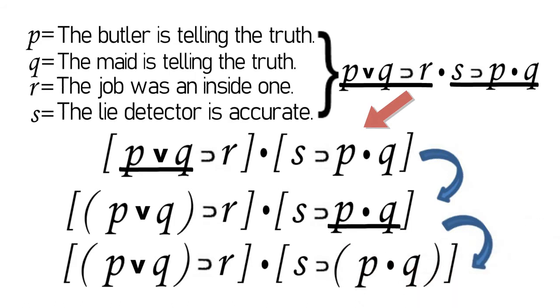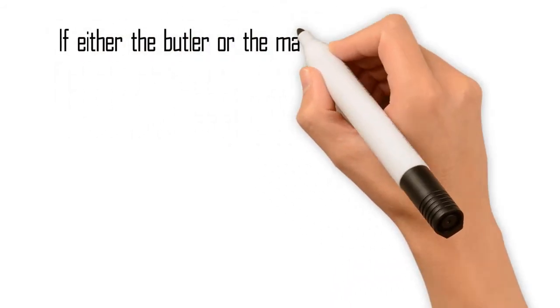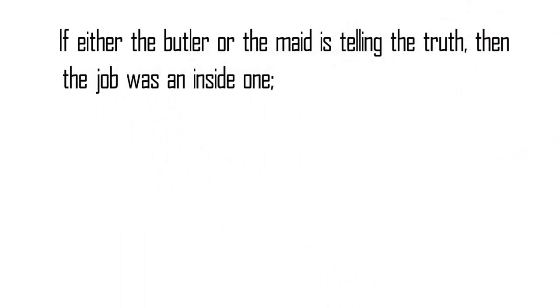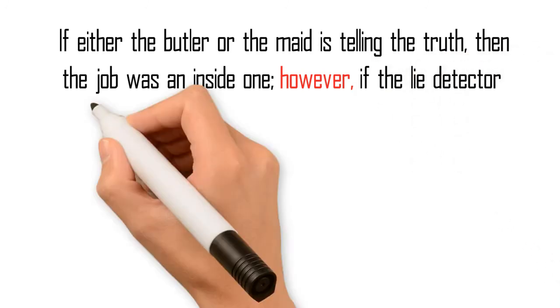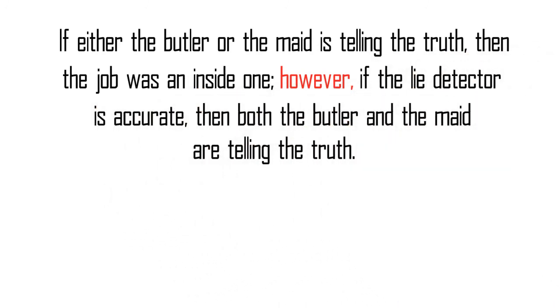Now, the symbol appears to be complete. Thus, the final symbol of the proposition, if either the butler or the maid is telling the truth, then the job was an inside one. However, if the lie detector is accurate, then both the butler and the maid are telling the truth, is as follows.